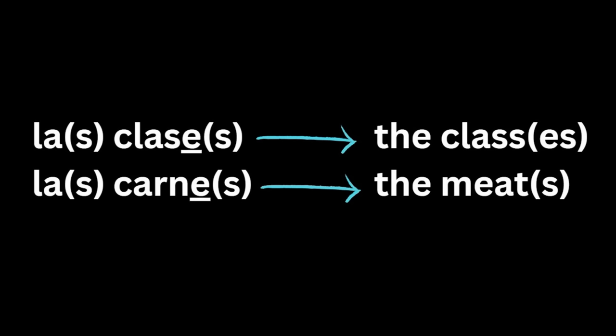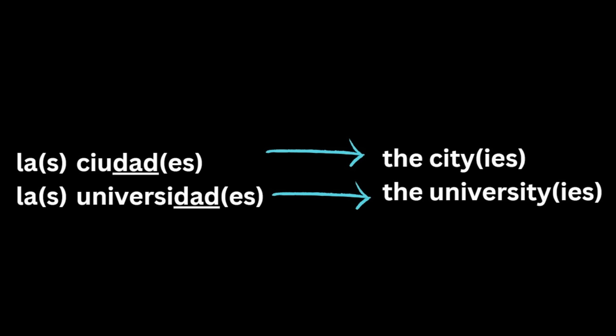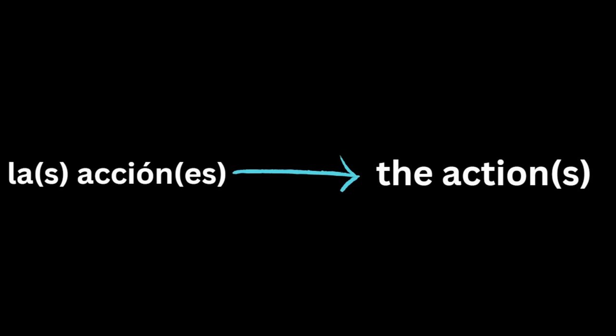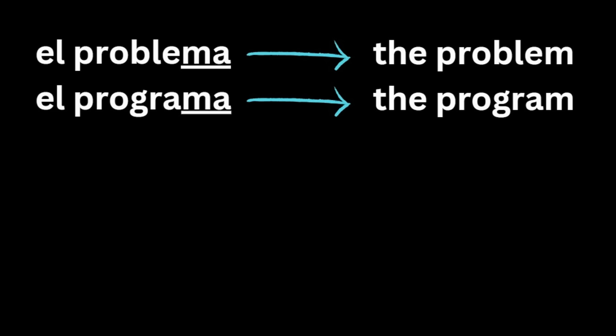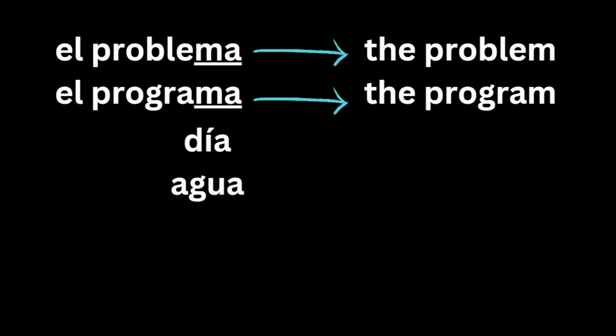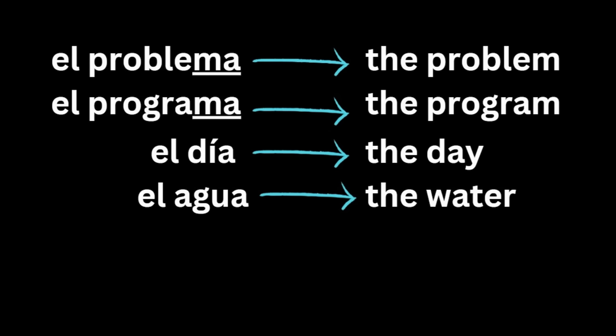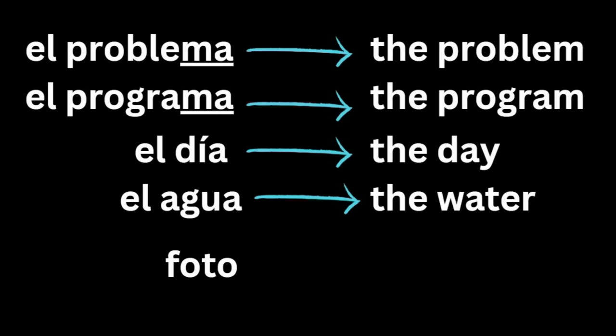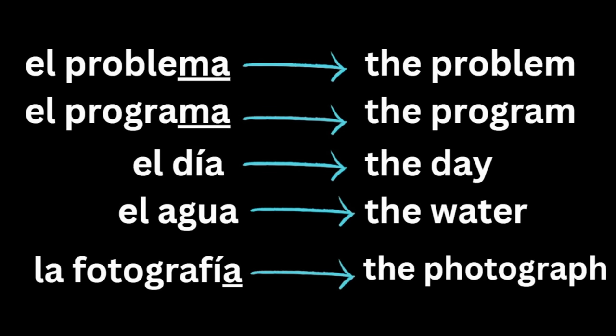Indefinite articles: 'un' is a/an masculine singular, 'una' is a/an feminine singular. 'Un libro' is a book, 'una piscina' is a pool. Don't say 'uno libro' — that means one book, not a book. To pluralize: unos libros means some books, unas piscinas means some pools. Some exceptions: words ending in 'e' like 'clase' and 'carne' use la. Words ending in 'dad' like 'ciudad' and 'universidad' use la. Words ending in 'sión' use la. Words ending in 'ma' like 'problema' and 'programa' use el. Also, 'día' and 'agua' use el, and 'foto' uses la because it's short for fotografía.